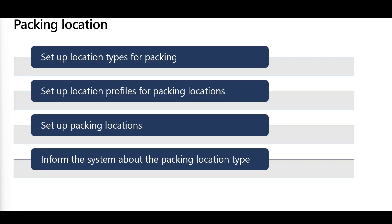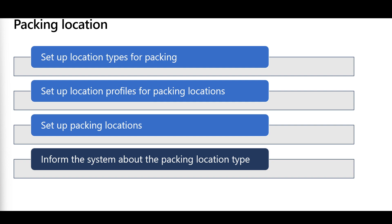The first step in the configuration is to set up warehouse locations for packing. You must have at least one packing location where the picked items will travel to and where the packing activities will be performed. In order to define a packing location, we have to configure the location type and location profile for the packing location, then define the packing location itself, and finally set the default packing location type in the warehouse management parameters.